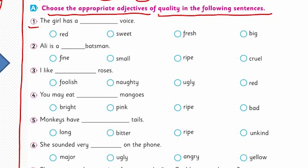Now let's do the exercise. Choose the appropriate adjectives of quality in the following sentences. The first one: 'The girl has a ___ voice.' Options are red, sweet, fresh, or big. It can't be red, can't be fresh, can't be big. Yes, it is 'sweet voice.' We could have sweet, bad, or good — but the only appropriate option here is sweet.